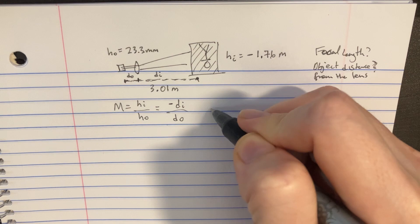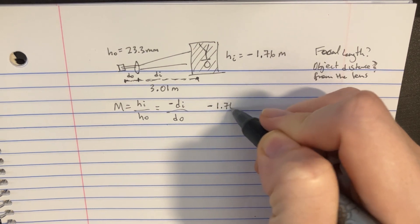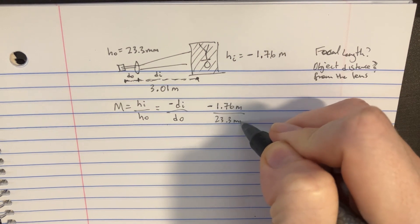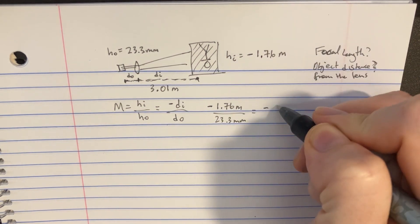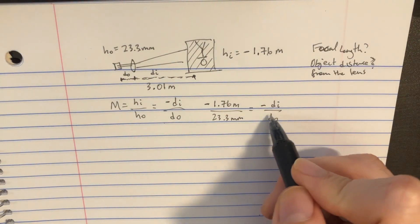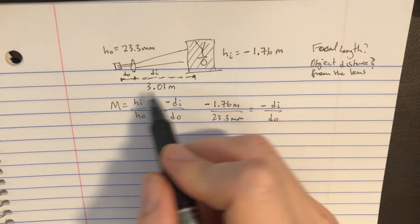So let's plug in these numbers. We have negative 1.76 meters divided by 23.3 millimeters, and that's supposed to equal negative DI over DO. Well, we have two variables in this equation, so let's see if we can find another equation somewhere.